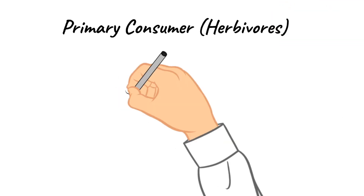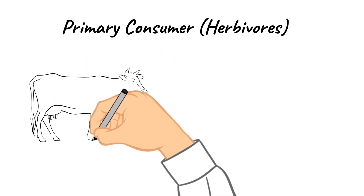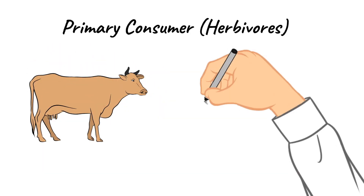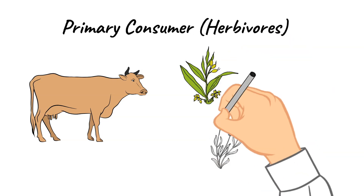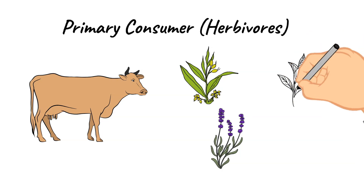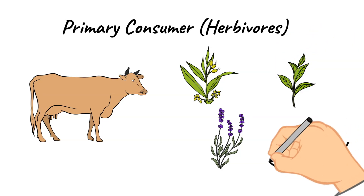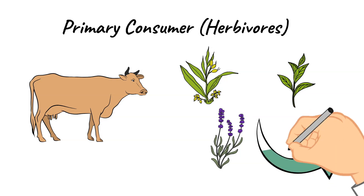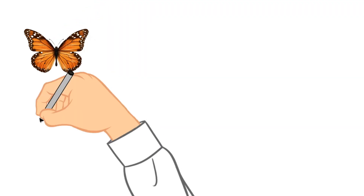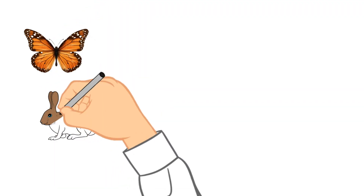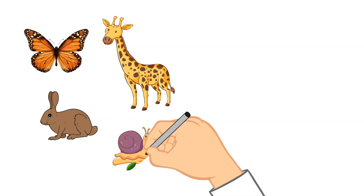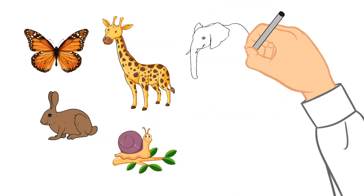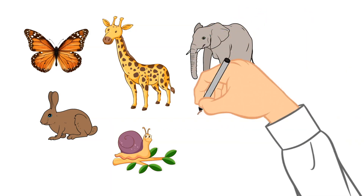The first type of consumer is a primary consumer, and this includes all the herbivores — or animals that just eat plants. Herbivores survive primarily off of plants, and these consumers can come in a variety of shapes and sizes. Examples of primary consumers or herbivores include butterflies, rabbits, giraffes, snails, elephants, mice, and deer.